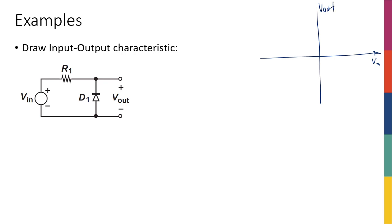If I'm at negative infinity, it means that here is negative infinity. Let's say here's my ground. Here's negative infinity. Therefore, every other node in the circuit that is not ground or negative infinity is going to be somewhere between them, including this node. So I'm going to have a negative number here.